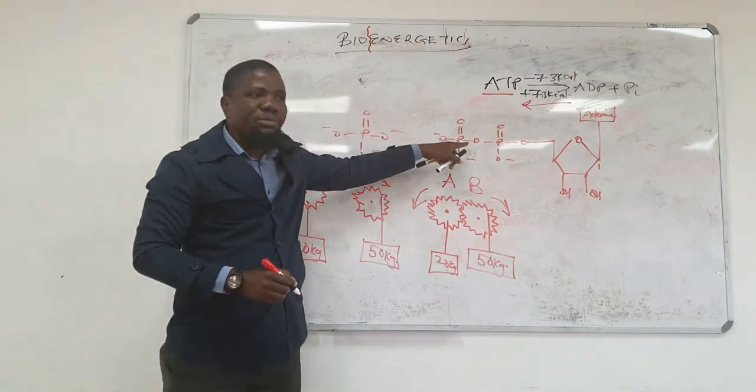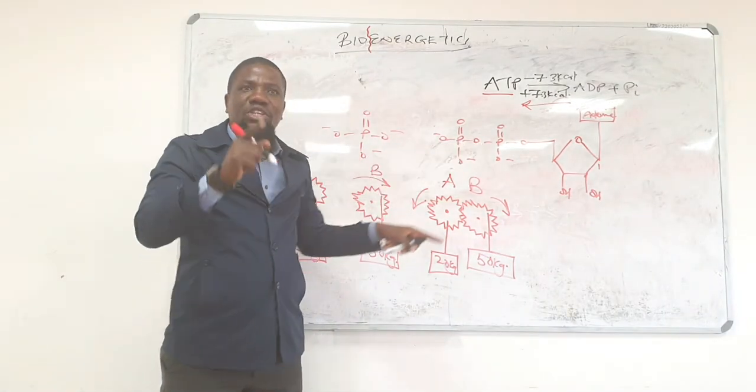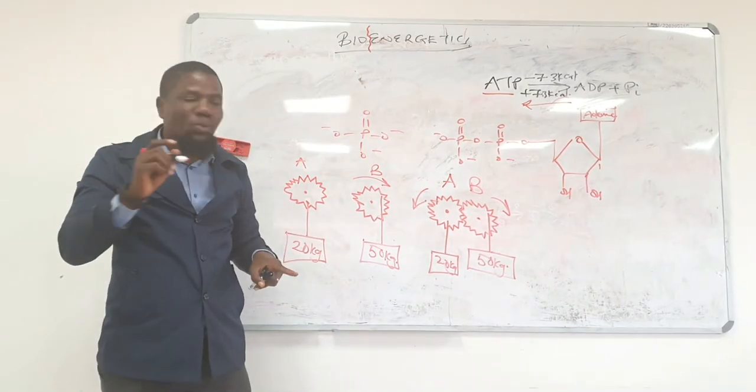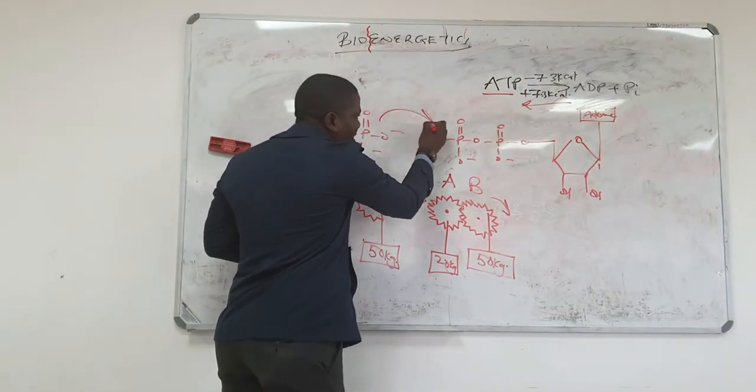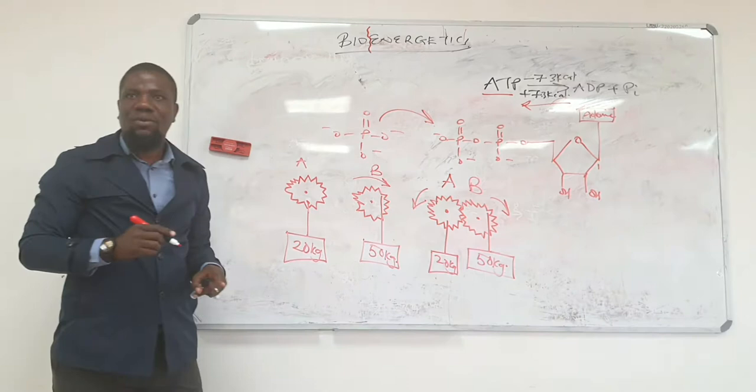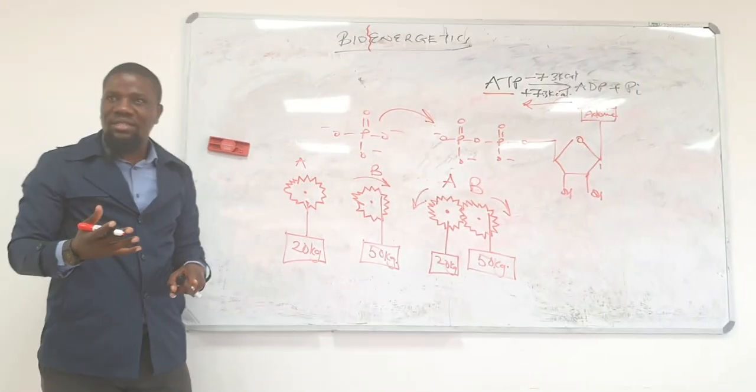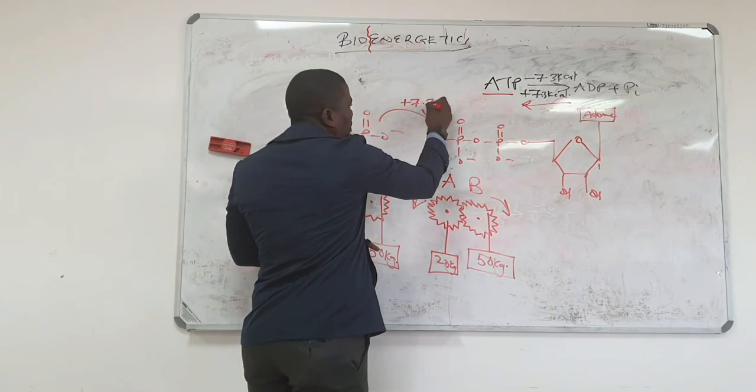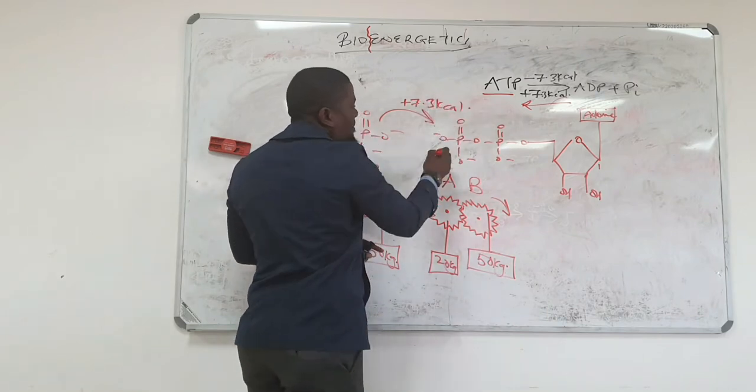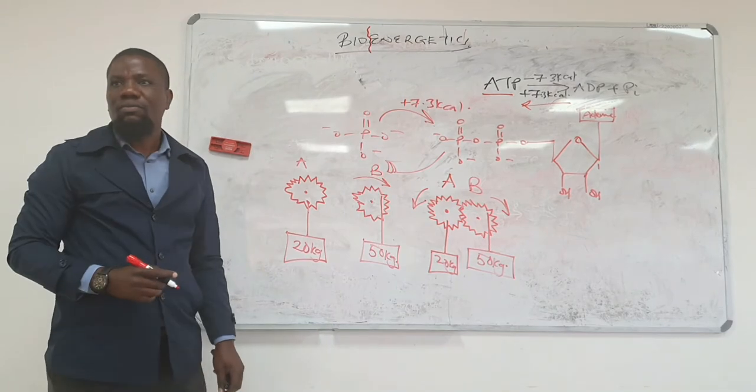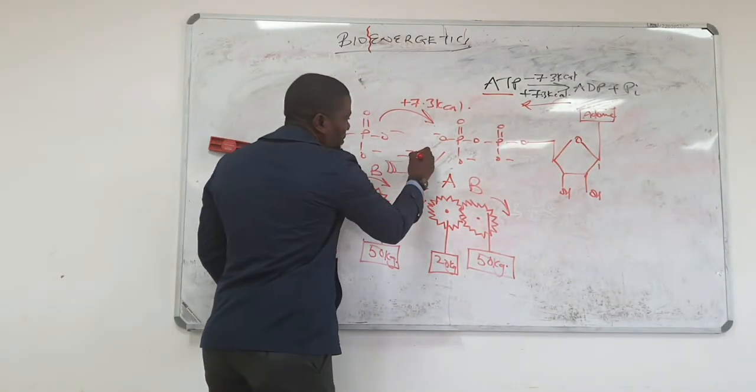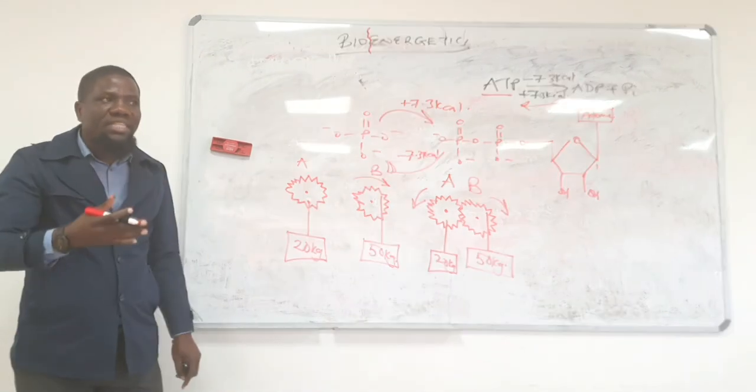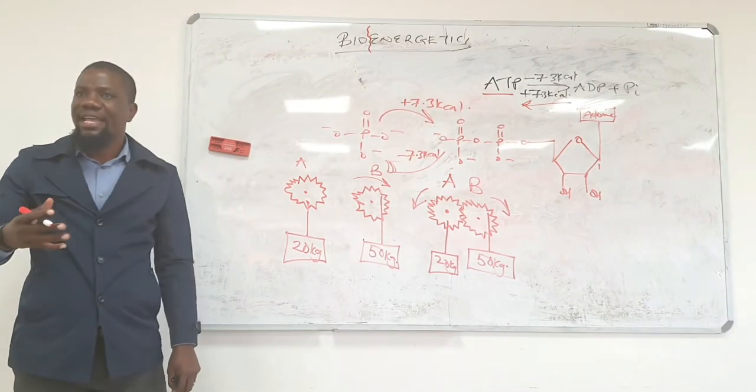So this becomes more stable. If you are trying to make ATP from ADP, what you are actually doing is you are making something more unstable. Do you get the sense? This is why you need to find the plus 7.3 kilocalories that came off in the process. Instability makes the molecule have high energy.